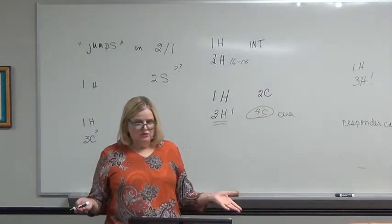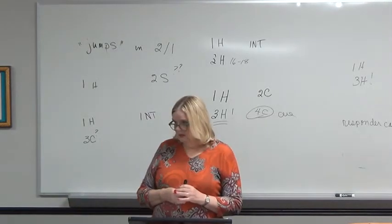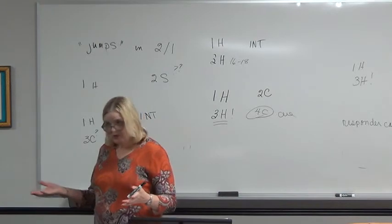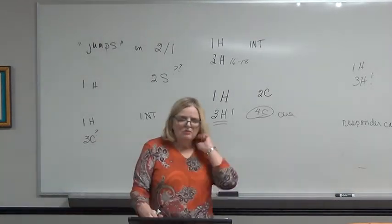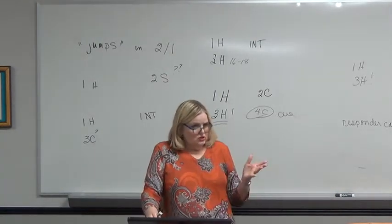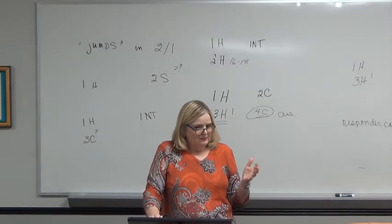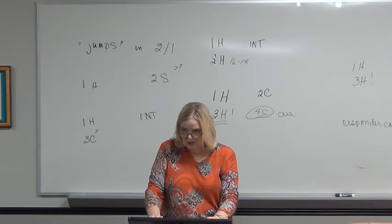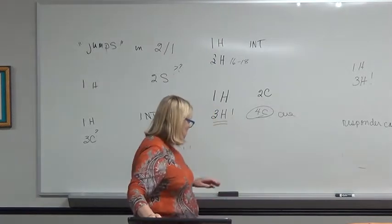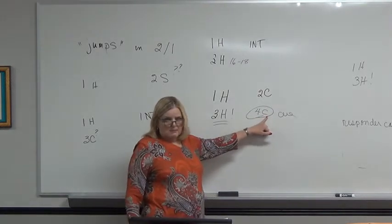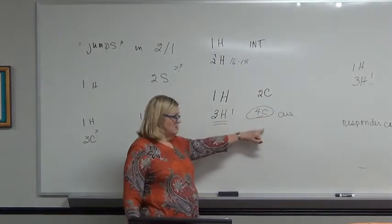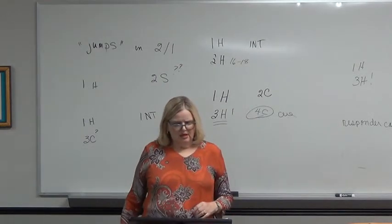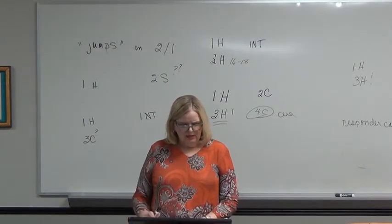He discourages, and I agree, jumping to four of the majors. There's no reason to jump to four. You're taking up so much bid room. If partner has to bid again, go slow. That is the beauty of two over one. Make your bids, and fast arrival denies interest in saying anything else. There's no reason to ever jump to four when you're playing two over one.